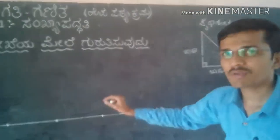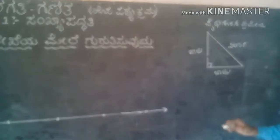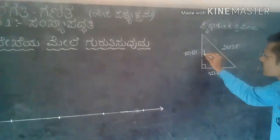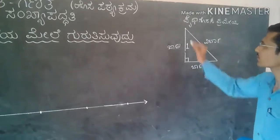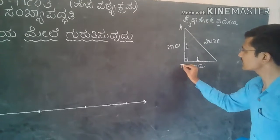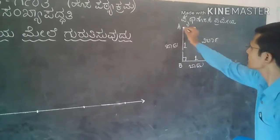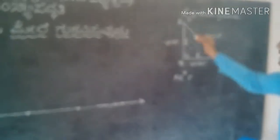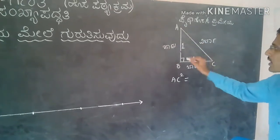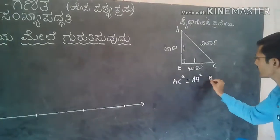If we add root to root, we get the root. The root is one unit. In order to make a construction, we have a square of the two sides together. So, A squared plus B squared.